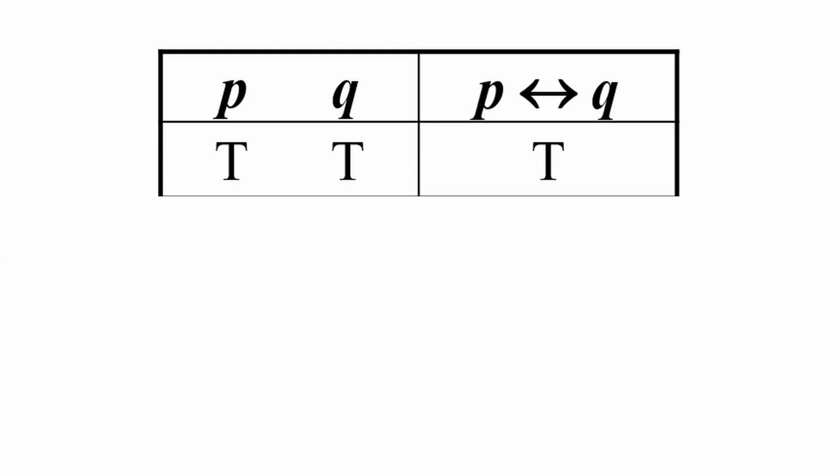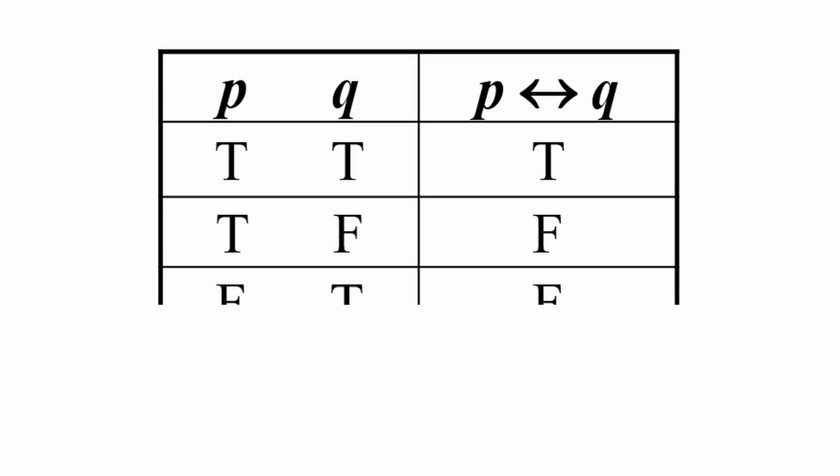If they are both true, then p if and only if q is true. If p is true and q is false, be careful about that, then the biconditional is false because it doesn't fit the first half of the conditional. And then if p is false and q is true, then the biconditional is false because it doesn't fit the second half of the biconditional.